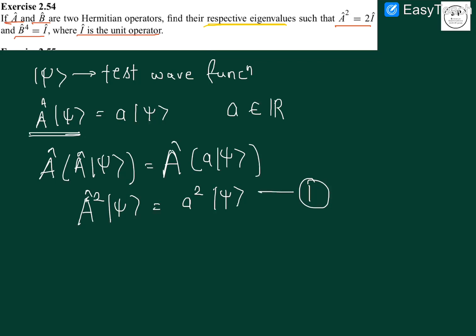Now if I directly apply A square operator on psi, instead I can replace this A square by 2I on psi. When an identity operator acts on a wave function it gives the wave function itself, so we have 2 psi.